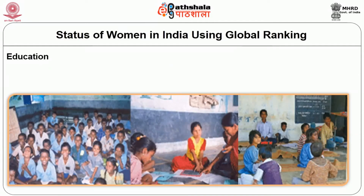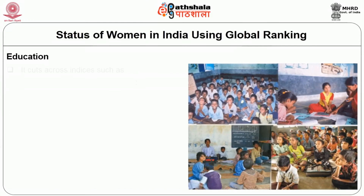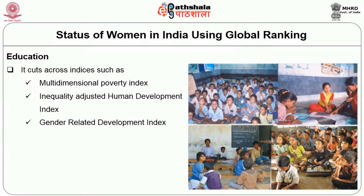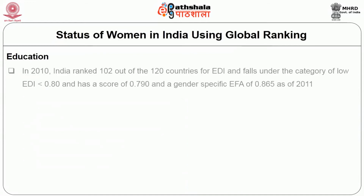Education has been used as an indicator for several indices in addition to the EDI and GPI — it cuts across the multidimensional poverty index, inequality-adjusted human development index, gender-related development index, global gender gap index, gender equality index, and gender equity index. In 2010, India ranked 102 out of 120 countries on EDI, falling under the low EDI category with a score of 0.790, and a gender-specific EFA index of 0.865 as of 2011.